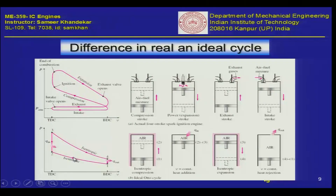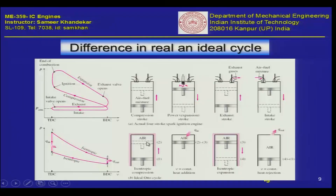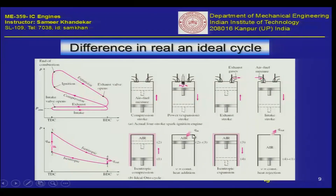What is the first striking difference between the two? The first striking difference is that the ideal cycle is a closed cycle — the air trapped inside the control volume remains in the same confined space, which changes during compression and expansion strokes. However, the air does not interact with the atmosphere except through work done via the piston and heat exchange processes Q-in and Q-out. The working fluid remains the same; we only do work and heat interactions, and the internal energy of the air keeps changing.